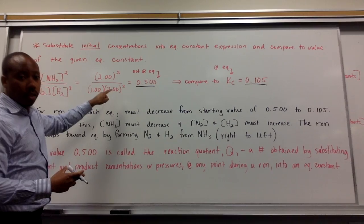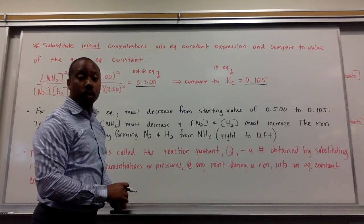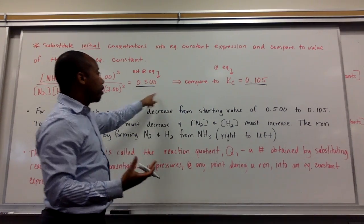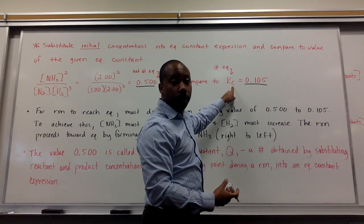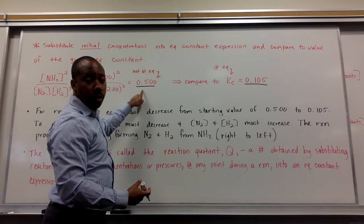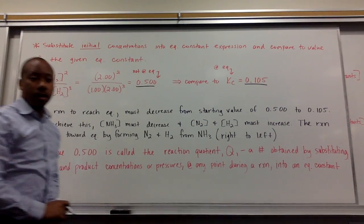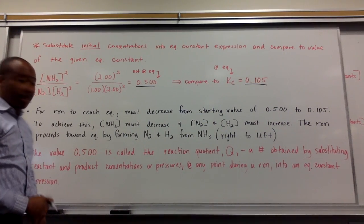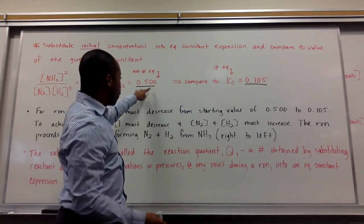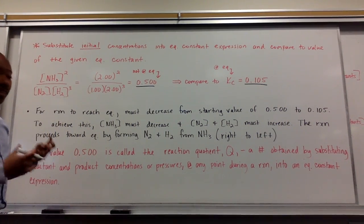So, when we plug in those concentrations, we get 0.500 for our new number. We don't know what it is yet. So, if we compare this to our equilibrium constant, we see that this one is much higher. So, to reach equilibrium, we have to go from 0.5 to 0.105. That's what this next statement says. For this reaction, to reach equilibrium, we have to decrease from our starting value of 0.5 to 0.105.